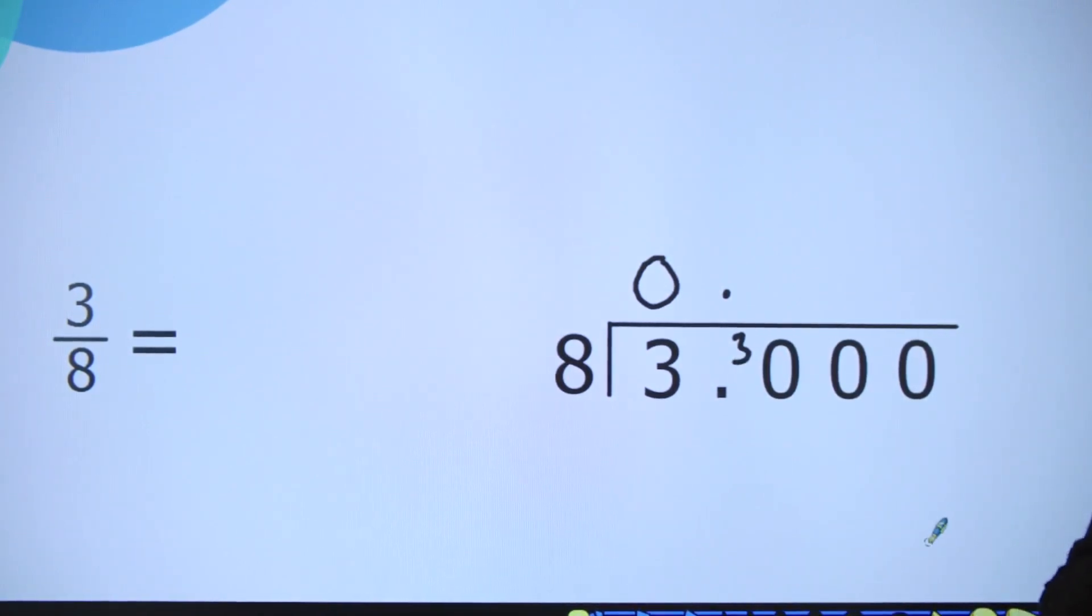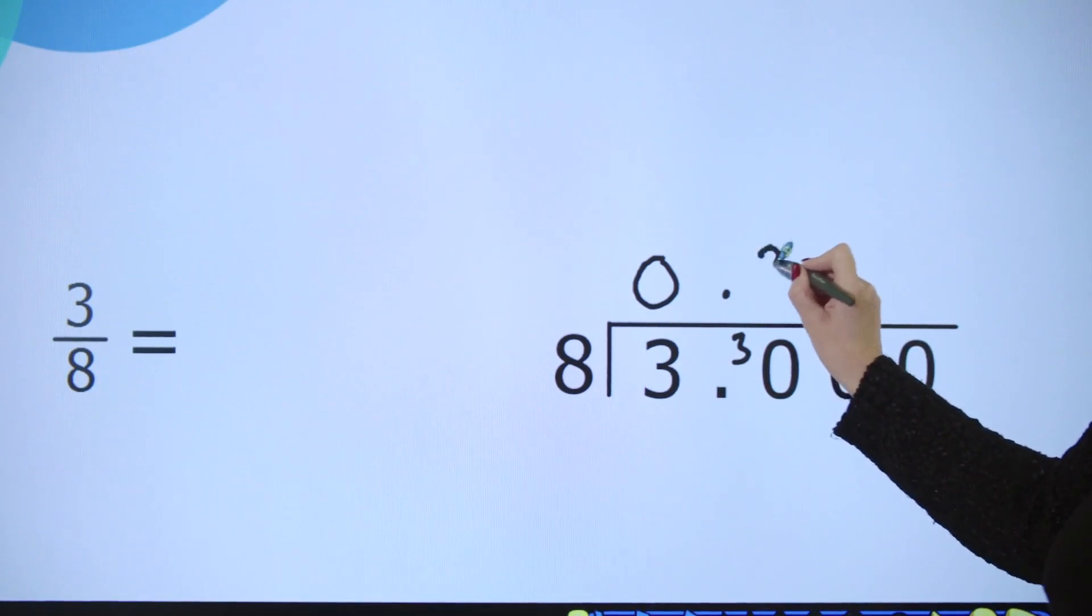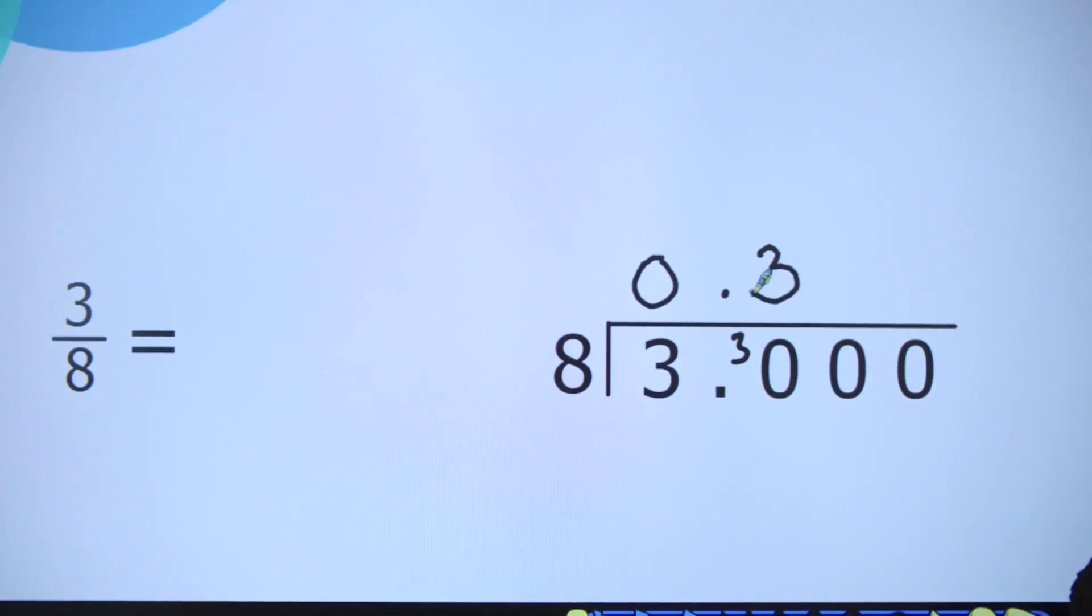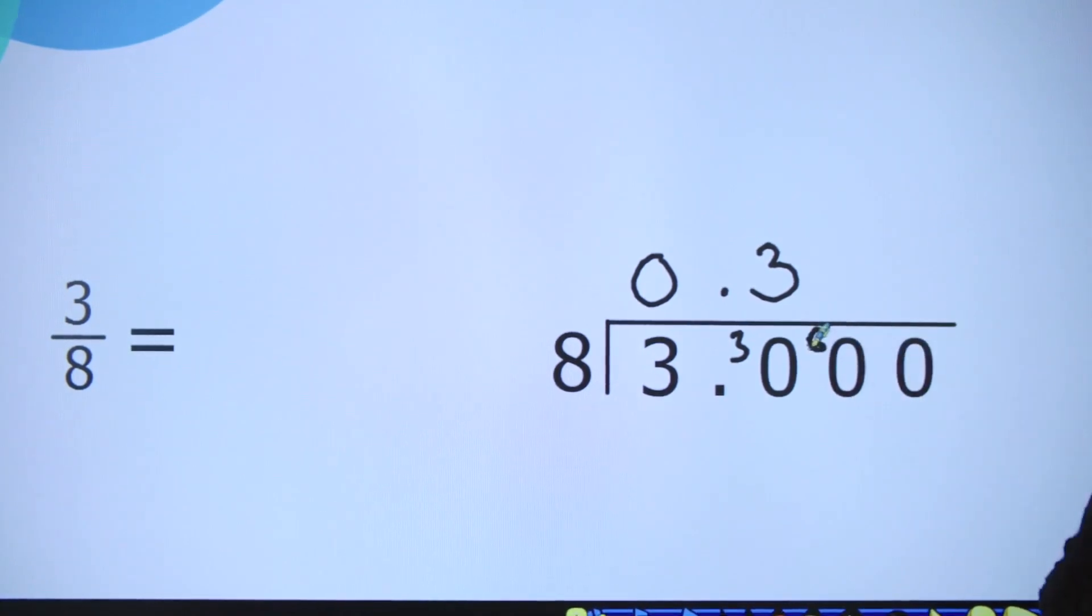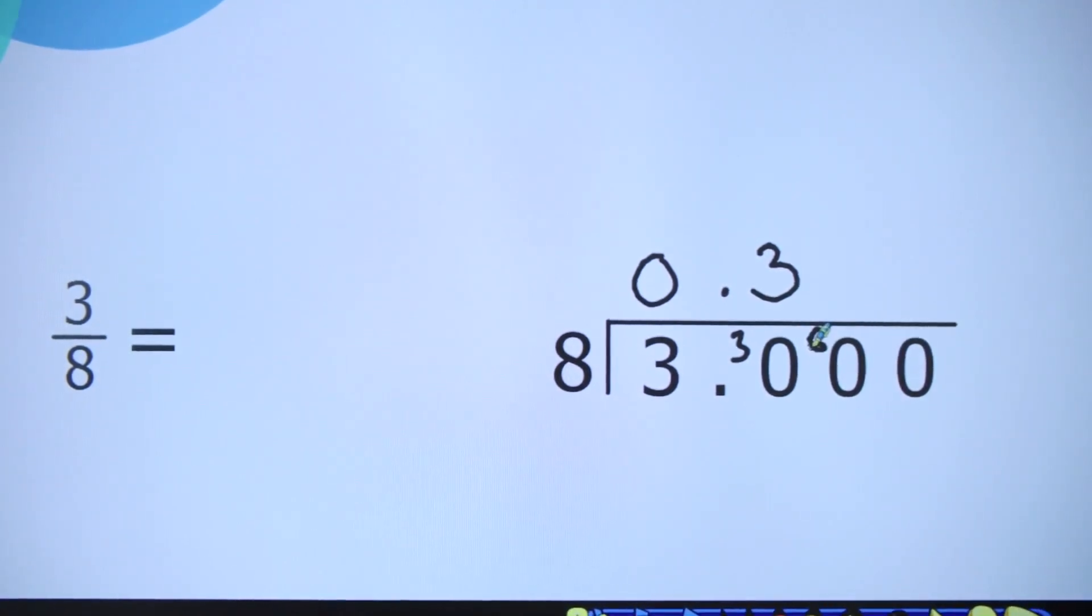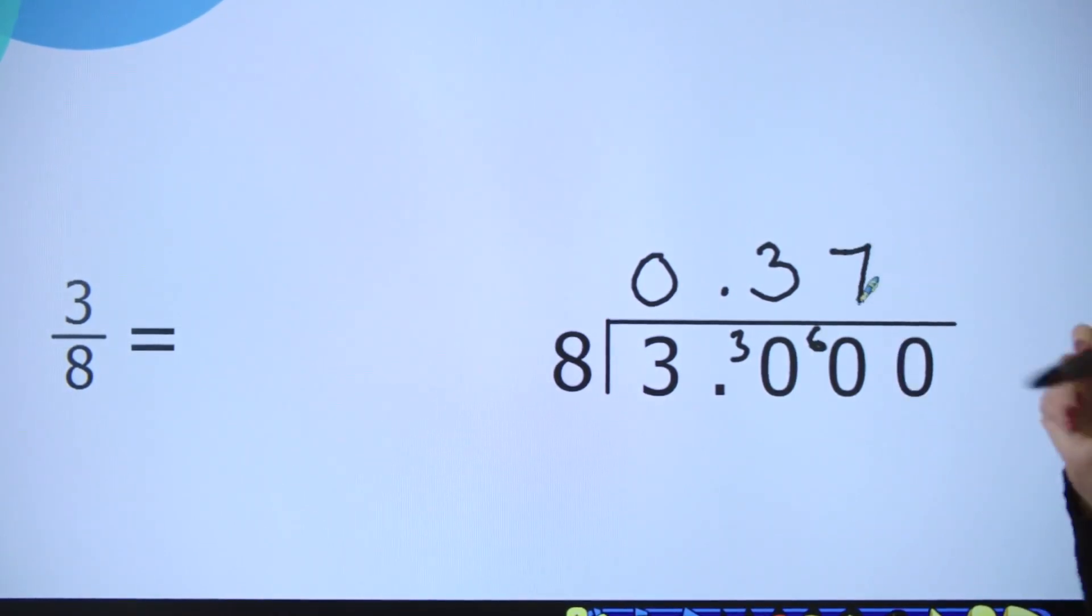How many eights are there in 30? Well, 3 × 8 = 24, so I can put my 3 up here. I have 6 remaining, so I'm going to put that in my hundredths column, giving me 60 hundredths. How many eights are in 60? 7 × 8 = 56, so I can put my 7 at the top.